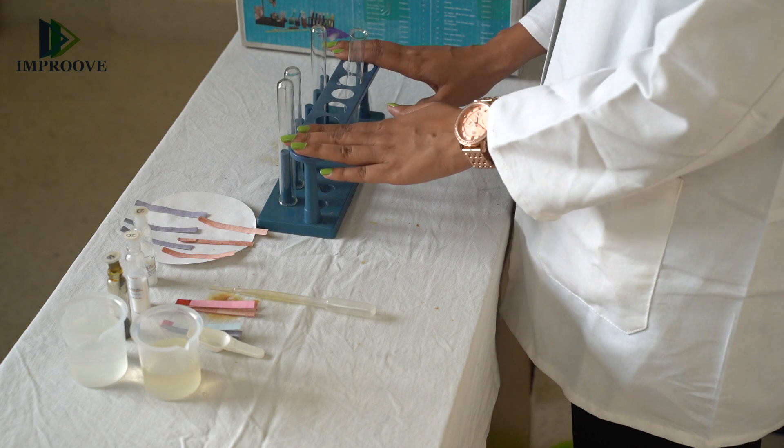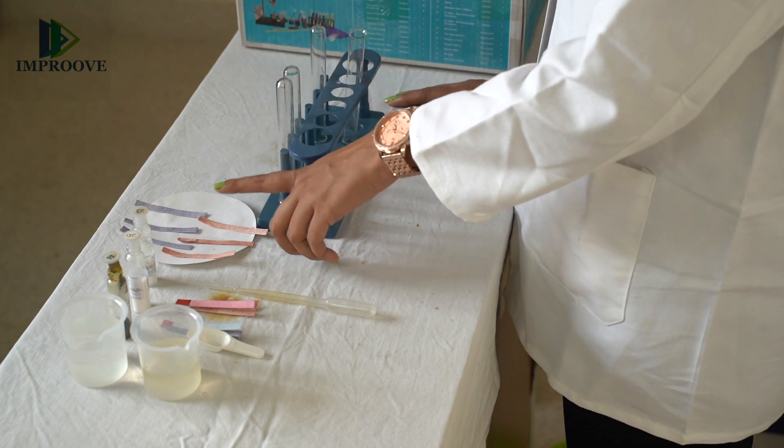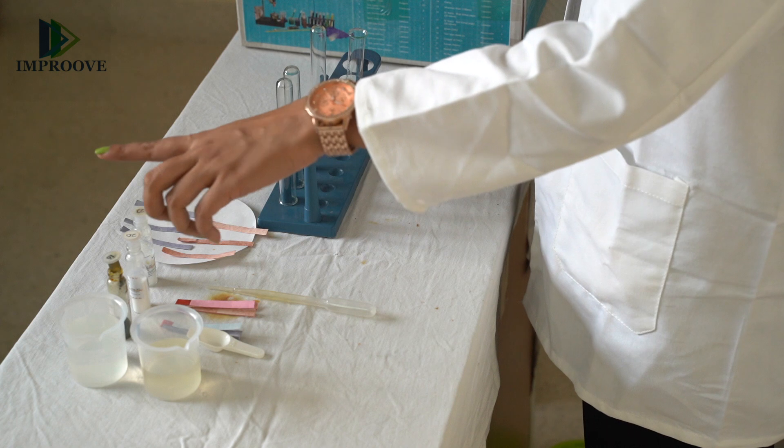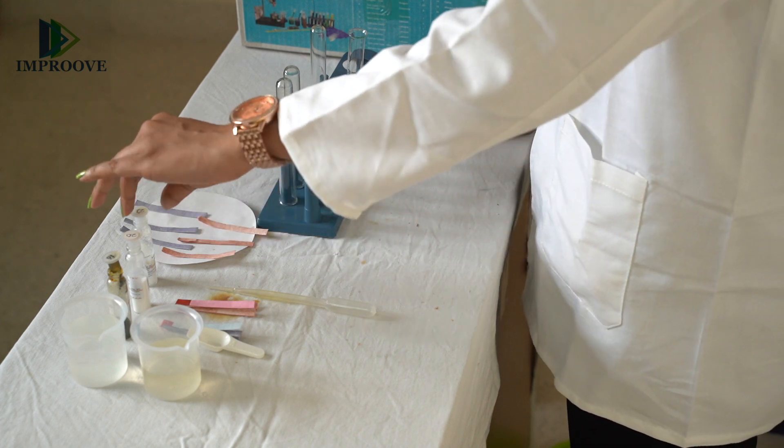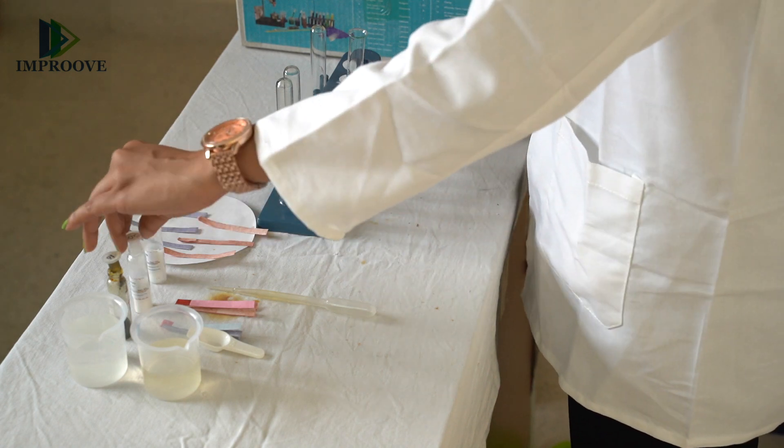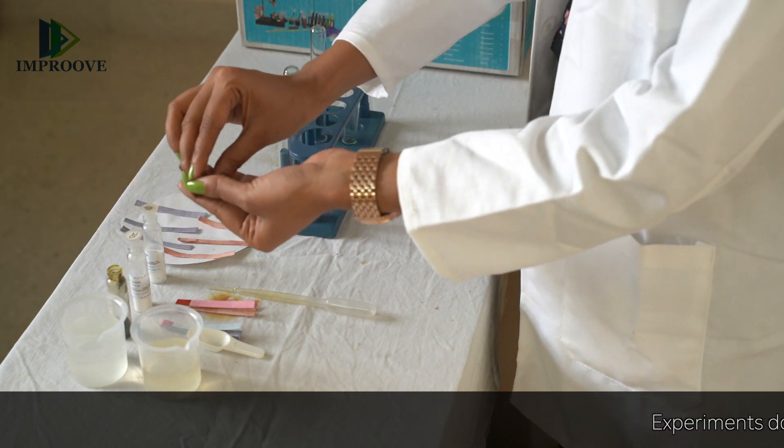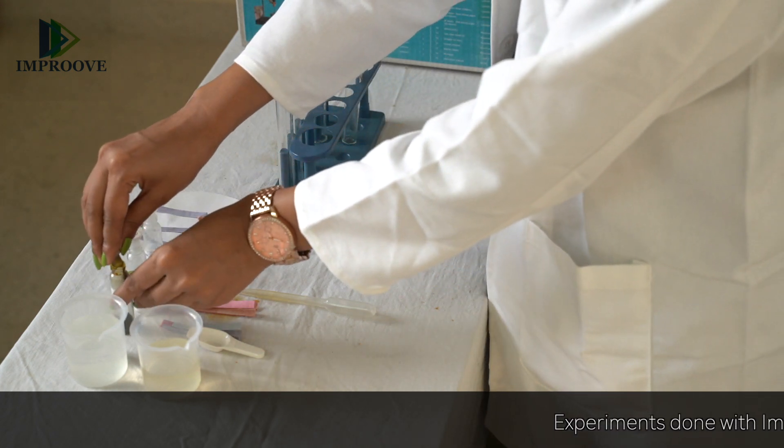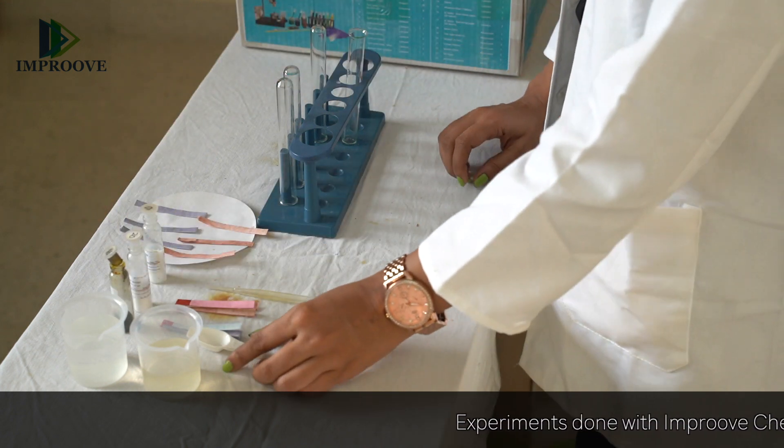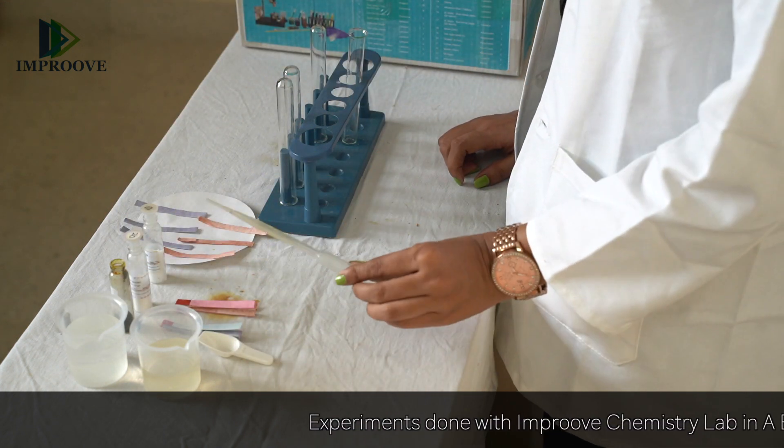For the experiment, you will need a few test tubes, red and blue litmus paper, three salts (sodium chloride, sodium acetate, and ferric chloride), two measuring cylinders, water, a measuring spoon, and a dropper.